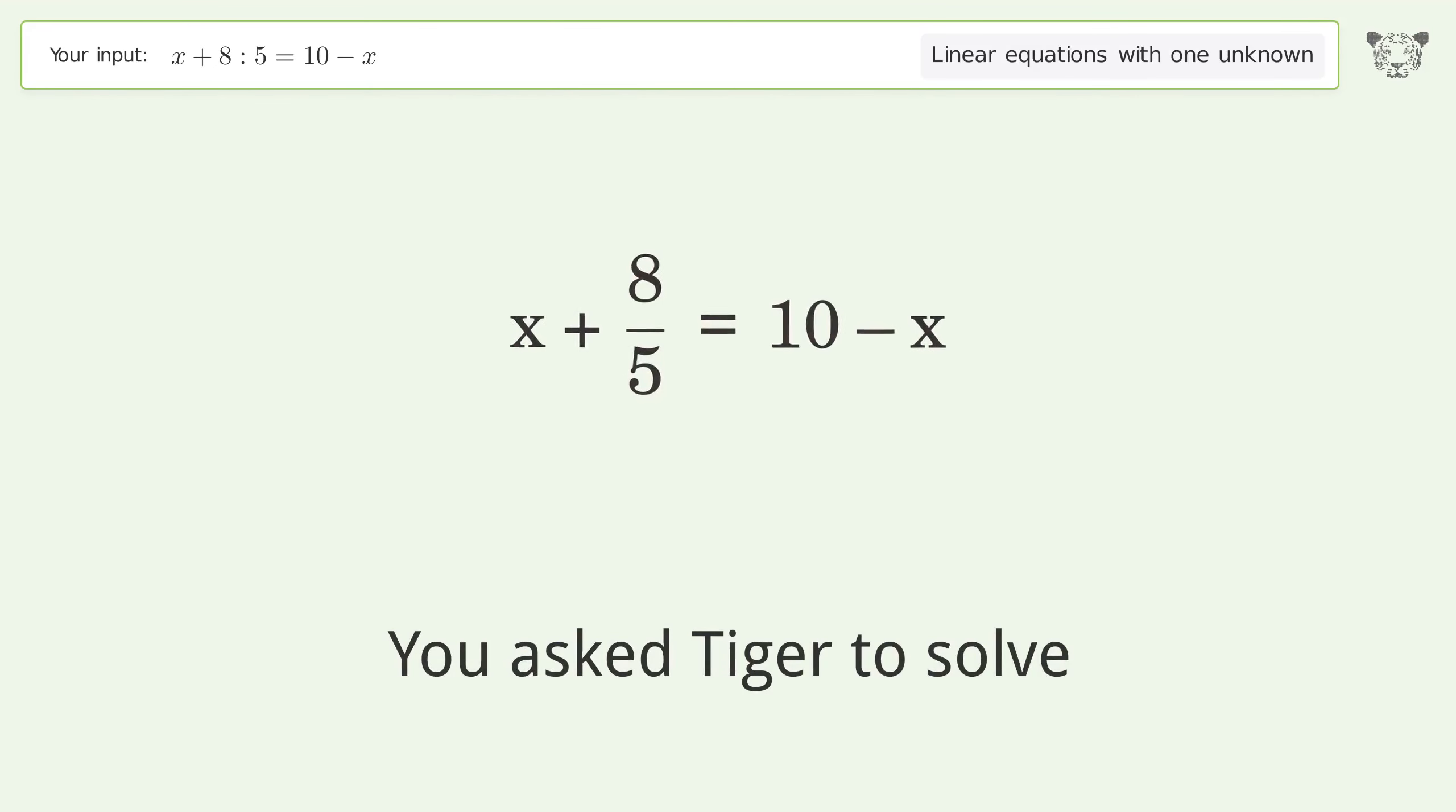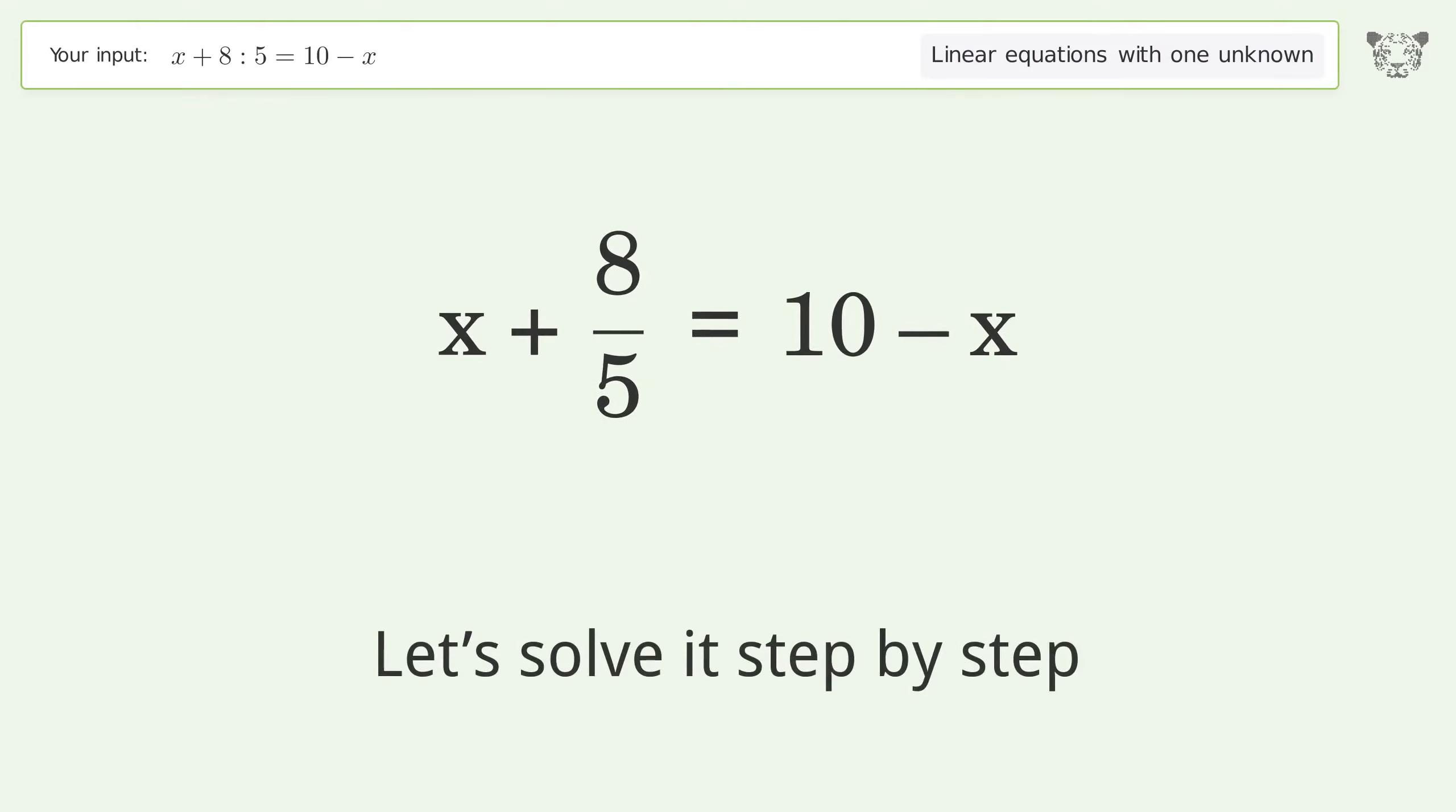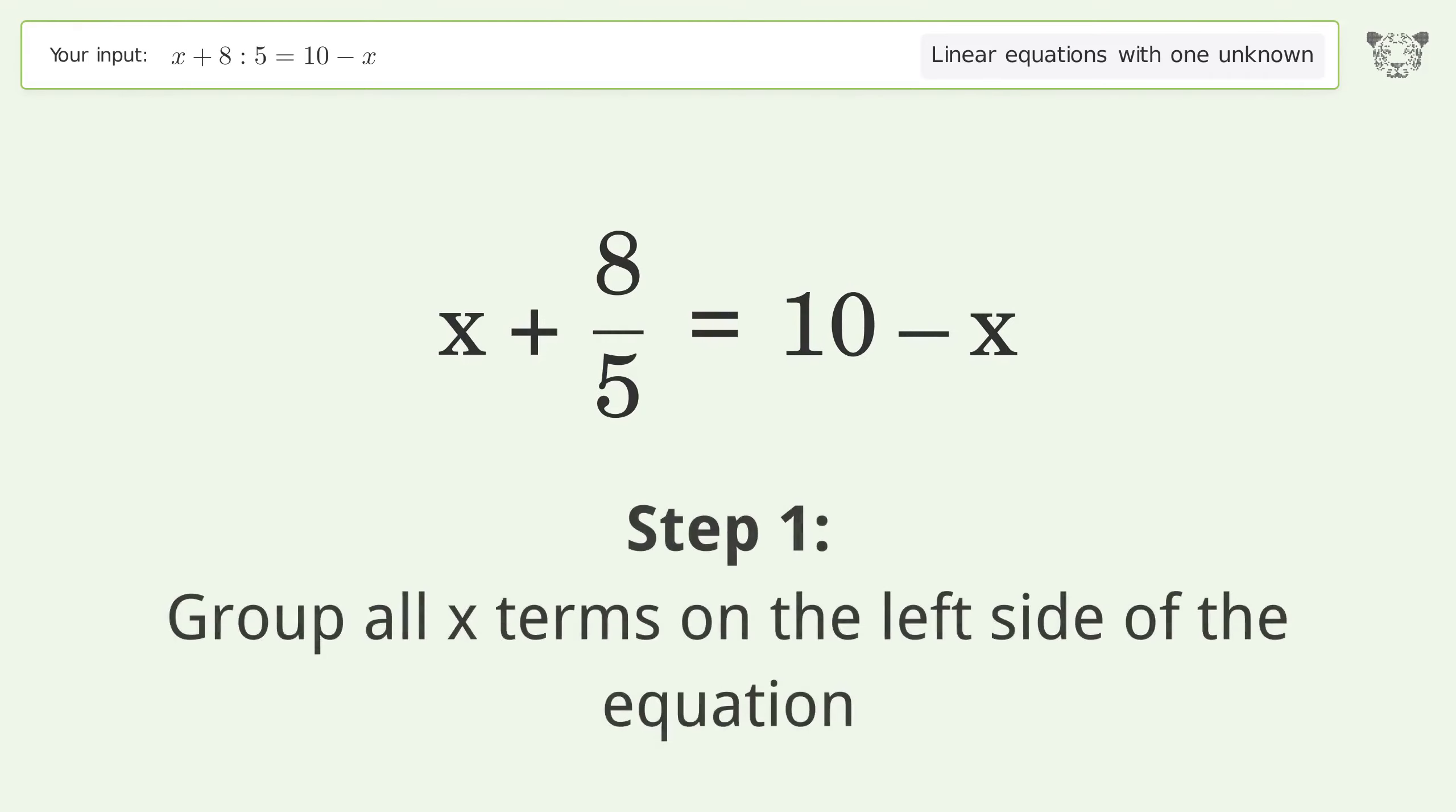You ask Tiger to solve this. It deals with linear equations with one unknown. The final result is x equals 21 over 5. Let's solve it step by step. Group all x terms on the left side of the equation.